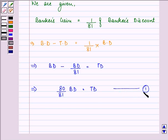We know that true discount is equal to bankers discount upon 1 plus RT. Let this be the second equation.